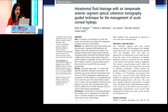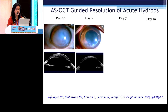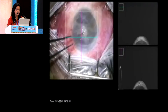You can do intrastromal fluid drainage for acute hydrops, such as in this case, and it just clears up over a period of time. This is possible because you can also do the drainage through the cysts which are present in the acute hydrops through this.